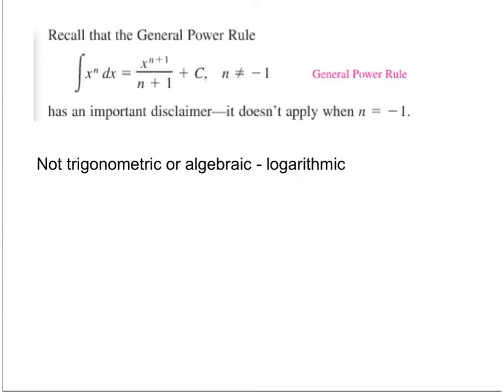Remember the general power rule. When you're integrating a polynomial, you're adding 1 to the exponent over that exponent plus C. It had a disclaimer here that said n cannot be negative 1.